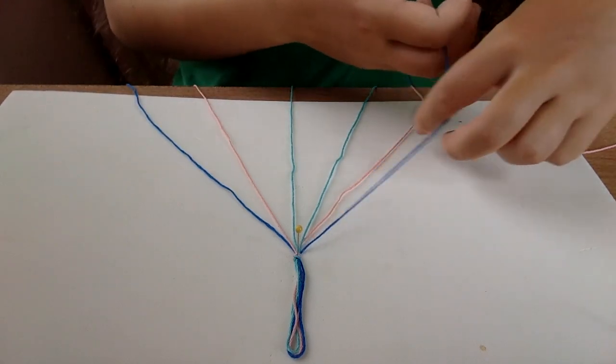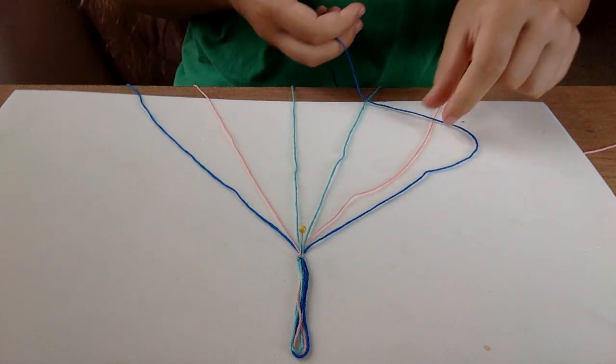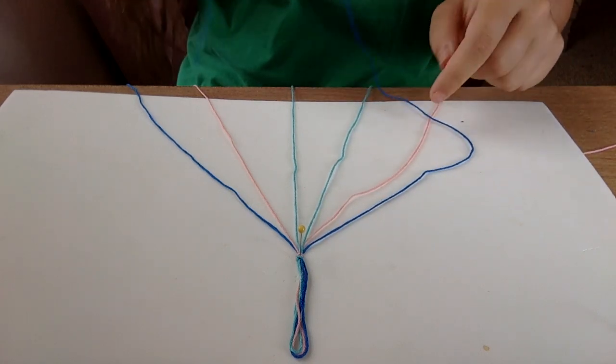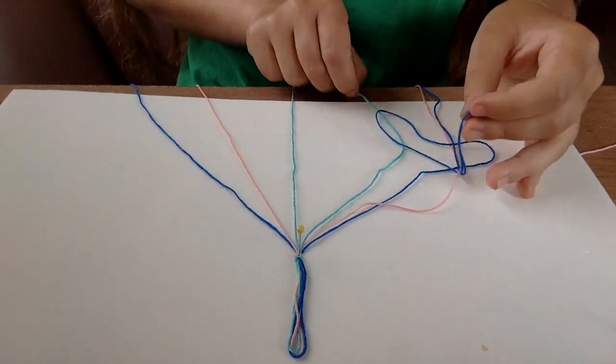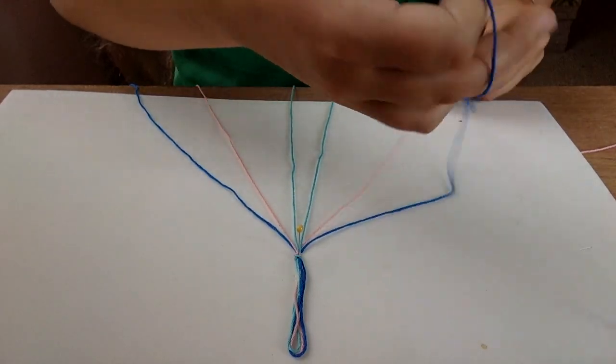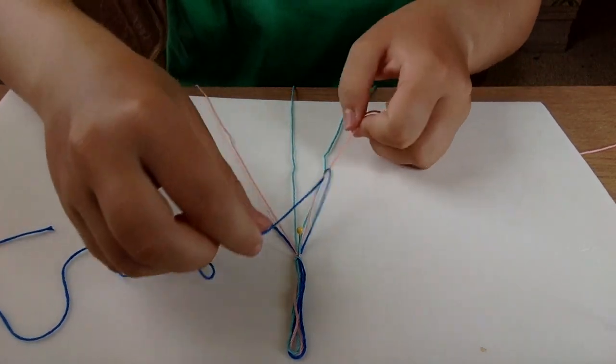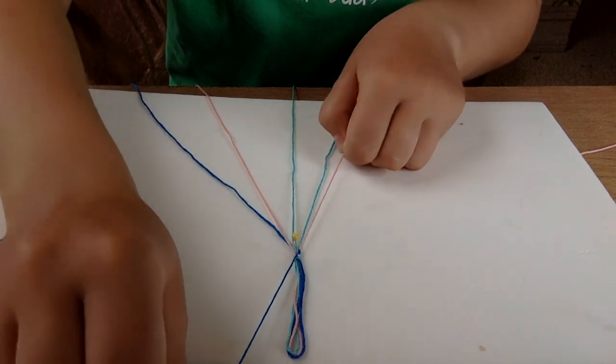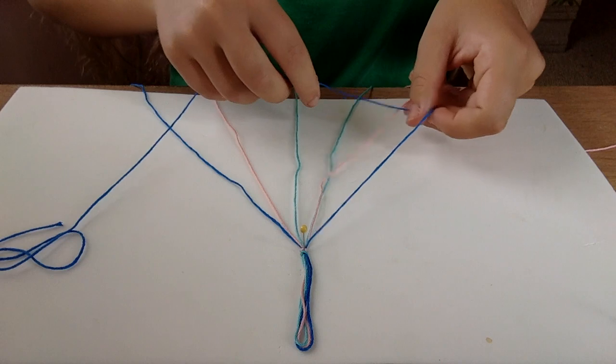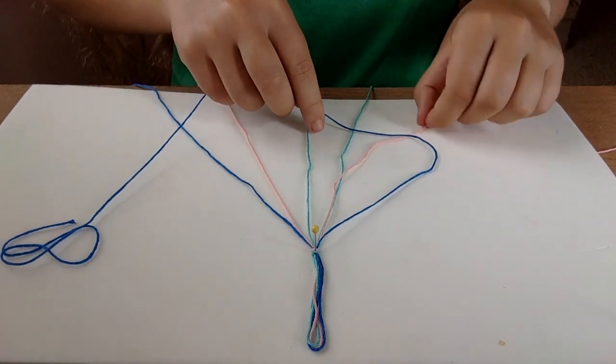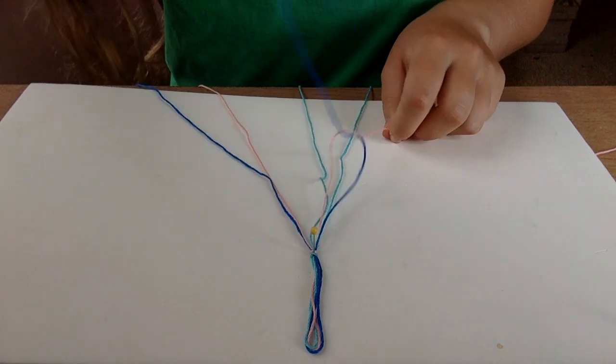So, how we do this is we're going to make a forward knot, which happens by making a four. And then, we're going to pull, and this is only half of the forward knot, so we have to make a second one of these in order to make a full forward knot. So, we make our four, and then we tuck our tail through, and we pull.